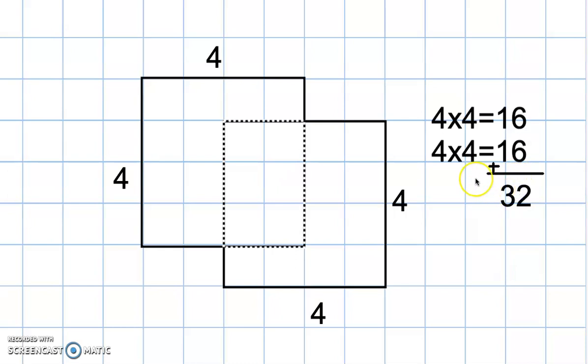We'll have a total of 32 square units if those two squares were separate. But remember, there's an overlap here, and I only want to count that once. I don't want to count it both times.